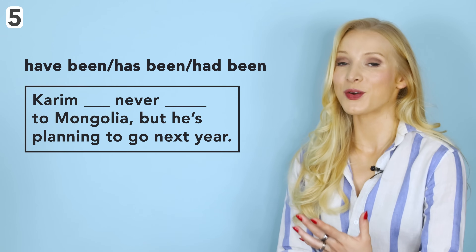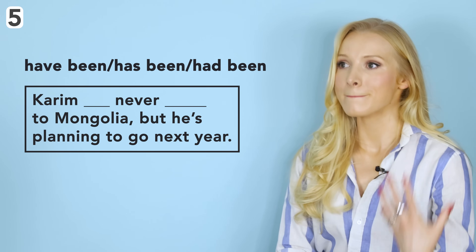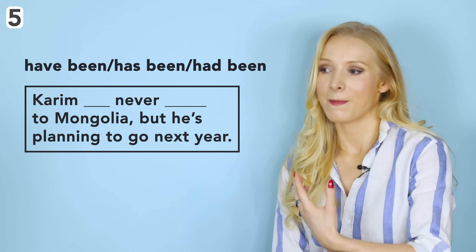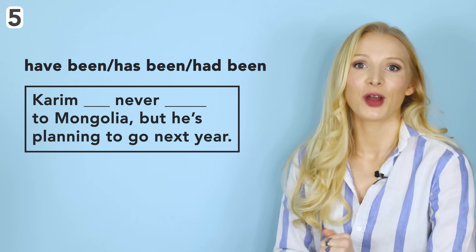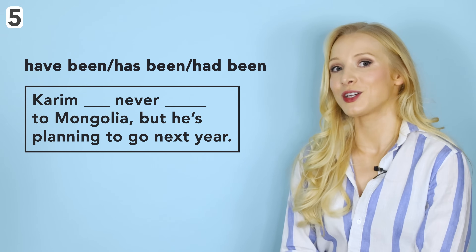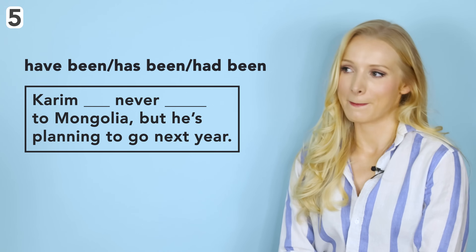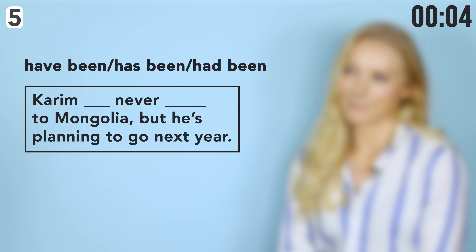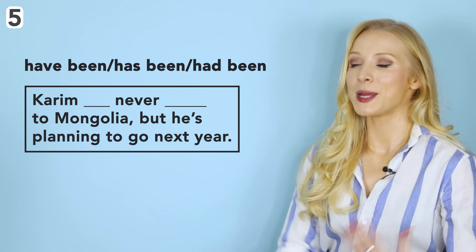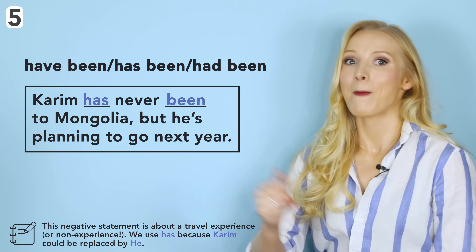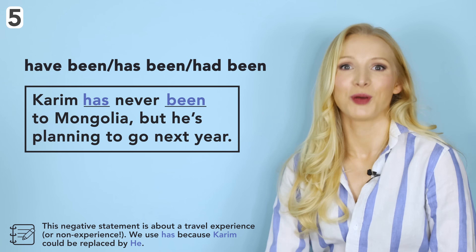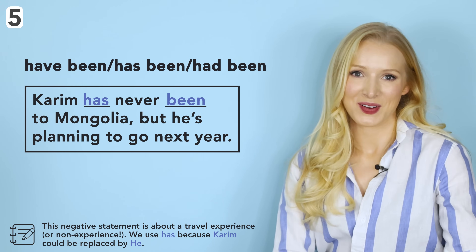Number five: 'Karim ___ never ___ to Mongolia, but he's planning to go next year.' The answer is has been — 'Karim has never been to Mongolia, but he's planning to go next year.' How many did you get right? Share your results in the comments section.